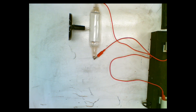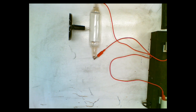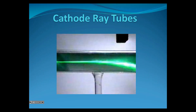Hey everybody, welcome to our new unit — and our last unit. This unit talks about models. Our last unit talked about the wave model of light and the particle model of light, and now we're talking about different models of the atom. You did a little bit of this in grade 10, but we're going to go into more detail. This is our new lesson.